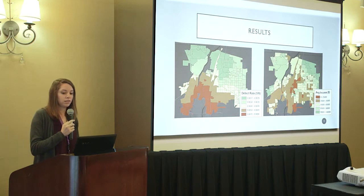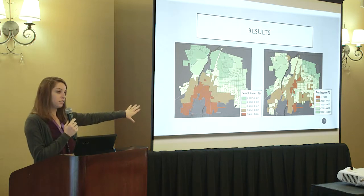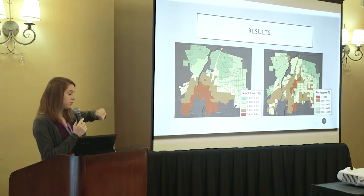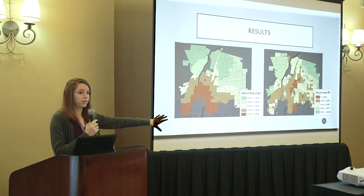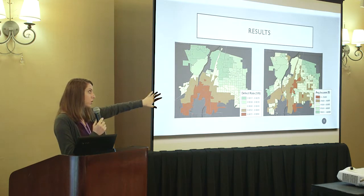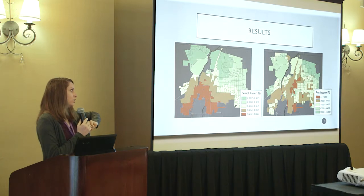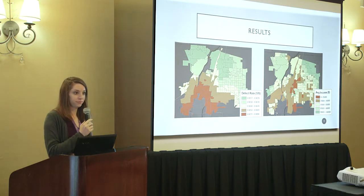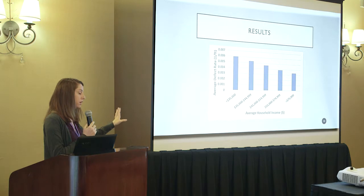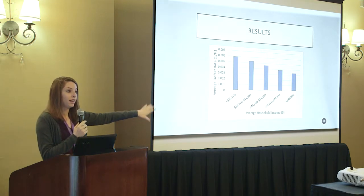This shows defect rates and household income. On the left image, higher defect rates appear in red and lower defect rates in green. On the right image, lower household income appears in orange in the lower right corner, while higher income appears in green in the upper right. You can see that higher defect rates and lower incomes are correlated. The graph also confirms that average defect rates are higher for lower income areas and lower for higher income areas.